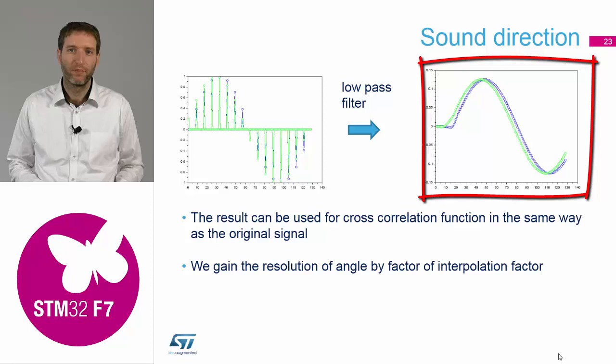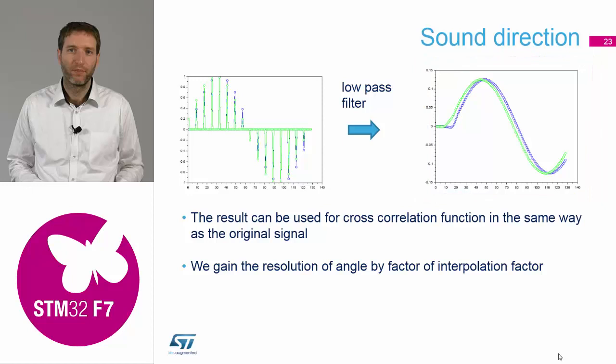If we use this output of the interpolation as the input of the correlation function, we are able to determine the delay in plus or minus four in this case. By these tricks, you can virtually increase the sampling frequency and use it in the same algorithm as before to get much nicer resolution of the delay.